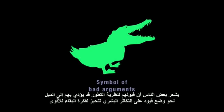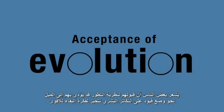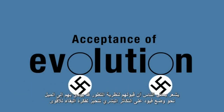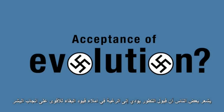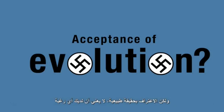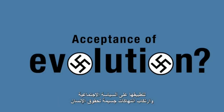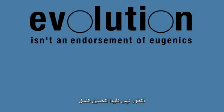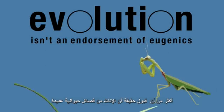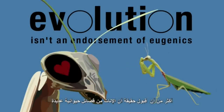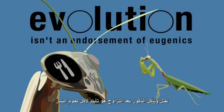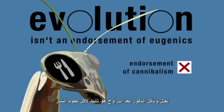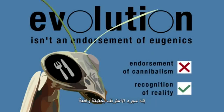Some people feel that an acceptance of evolution implies or leads inevitably towards the desire for supremacist control over the breeding of human beings. But recognising facts about nature doesn't mean you have any wish to apply them to social policy and commit gross violations of human rights. Evolution isn't an endorsement of eugenics, any more than accepting the fact that the females of numerous species kill and eat the males after mating is an endorsement of cannibalism. It's simply a recognition of reality.